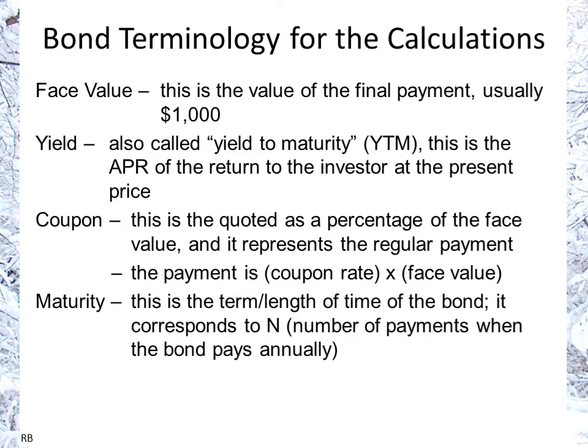Maturity is the length of time, or the term of the bond. It is also related to the number of payments N — it's the same number when N is an annual payment, but it's going to be twice as high as N if you're being paid semi-annually. So that's something we'll have to adjust for in calculations.